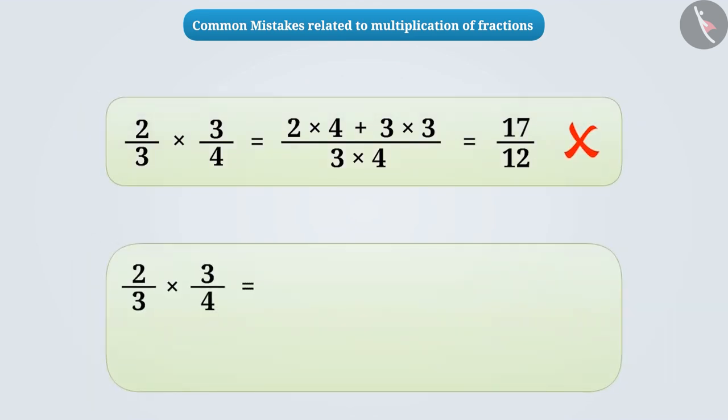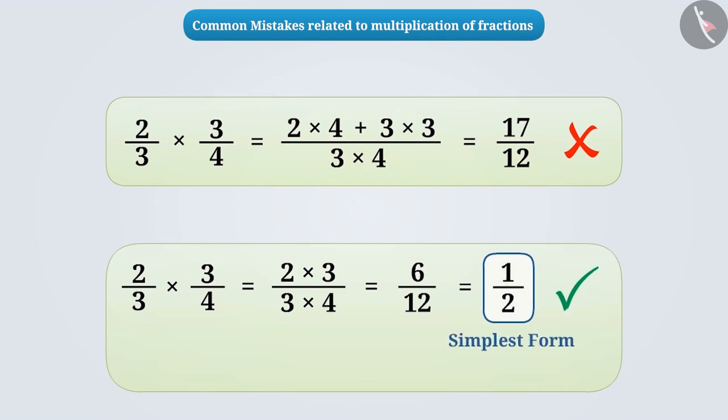The correct method is that the numerator of the result is the product of the numerators of the given fractions and the denominator of the result is the product of the denominators of the given fractions. Therefore, the correct answer is 6 by 12, which can also be expressed in its simplest form as 1 by 2.